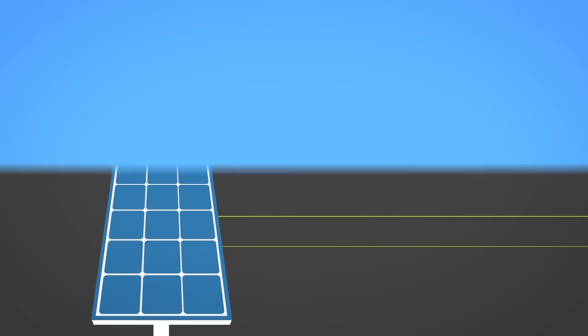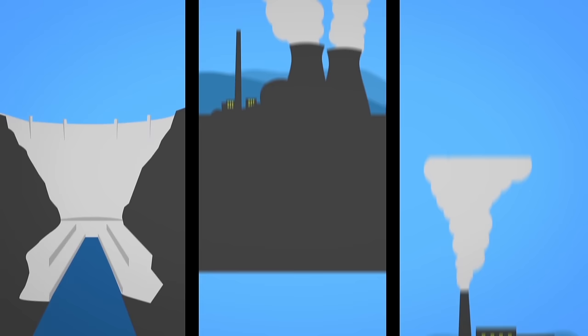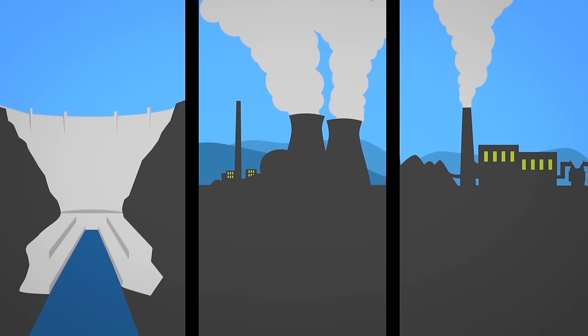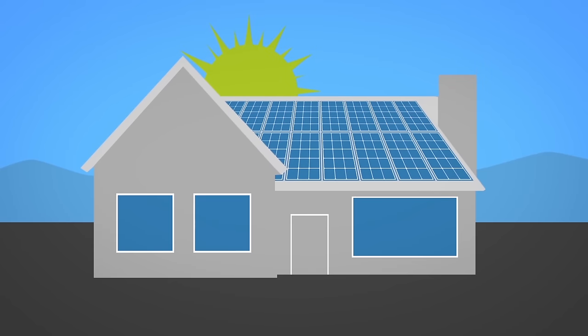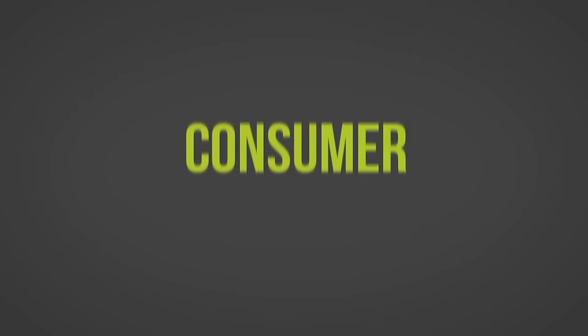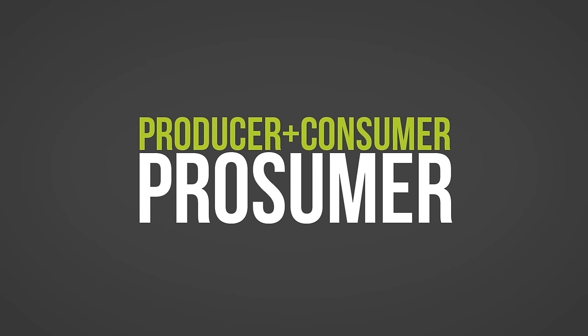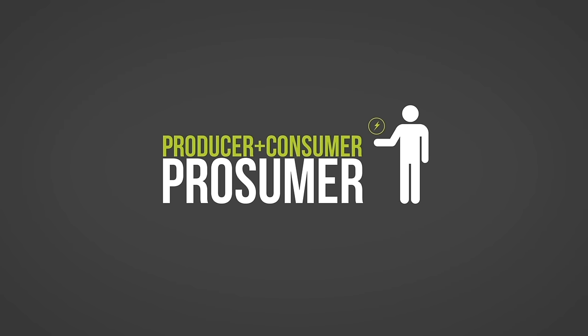One of solar PV's major advantages is that it transitions electricity generation from big, centralized facilities to smaller, decentralized production sites, like the roof of your house. This turns energy consumers into so-called prosumers, people that produce and consume their own electricity.